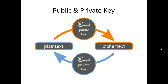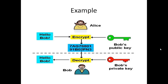Going back to the example: when Alice wants to send a confidential message to Bob, she uses Bob's public key to encrypt the message. Bob then uses his own private key to decrypt the message into its original format. The magic in cryptography is that even though Eve knows Bob's public key, she is unable to decrypt the message.